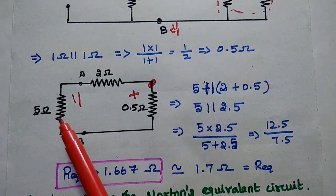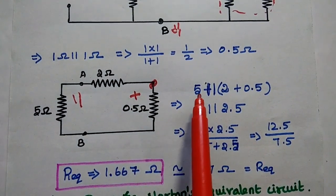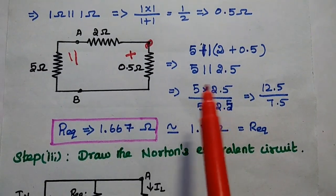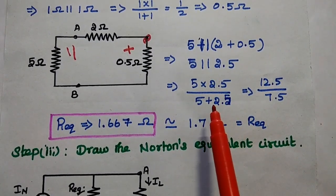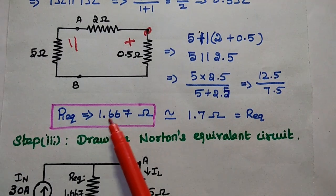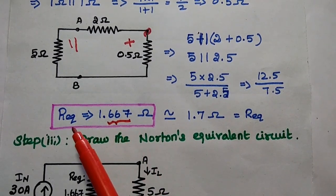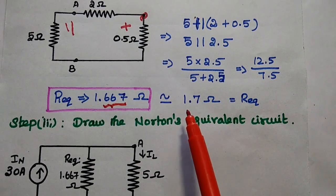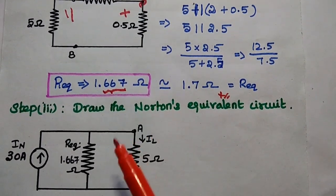So here, 5 ohm is in parallel with the series combination of 2 ohm and 0.5 ohm. That gives us 5 parallel with 2.5, which equals 5 times 2.5 divided by 5 plus 2.5 — that is 12.5 divided by 7.5, giving 1.6666 repeating. For simplification we consider 3 decimal digits, so the equivalent resistance is equal to 1.667 ohm.